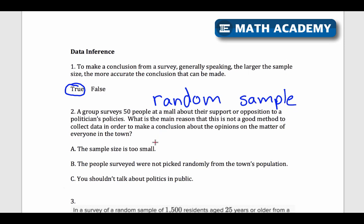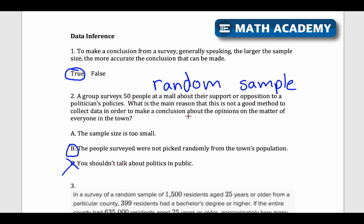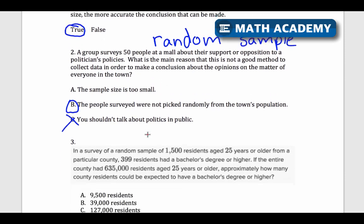B, the people surveyed were not picked randomly from the town's population. Yeah, I didn't pick them randomly. It was just 50 people at a mall. So let's say that mall was a very expensive mall, then not everyone might be able to shop there. Only people who are very wealthy might be able to shop there, and so I won't get a good representative group from my population. So yeah, the people weren't picked randomly here. So that's going to be the main reason that I might not be able to make an accurate conclusion. So look for that random sample. That's really important for these types of questions.